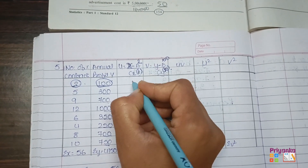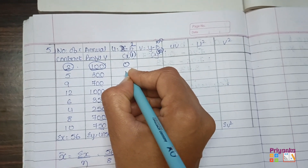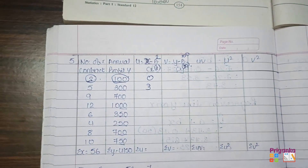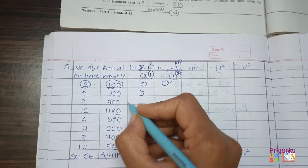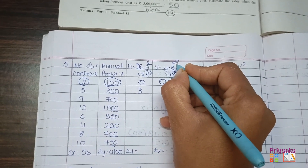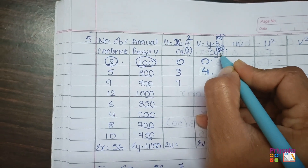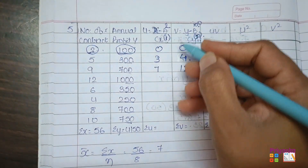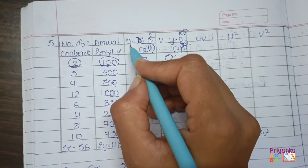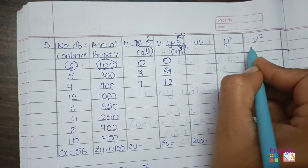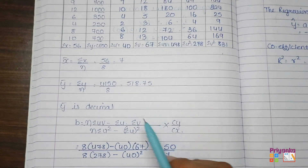The calculation: 2 minus 2 divided by 1 equals 0. Then 5 minus 2 divided by 1 equals 3, and continue for the remaining. For Y: 100 minus 100 divided by 50 equals 0. Then 300 minus 100 divided by 50 equals 4. Then 700 minus 100 divided by 50 equals 12. Continue for UV multiplication, U², and V² columns. The V² column is needed for the coefficient of determination. After all calculations, plug into the formula.